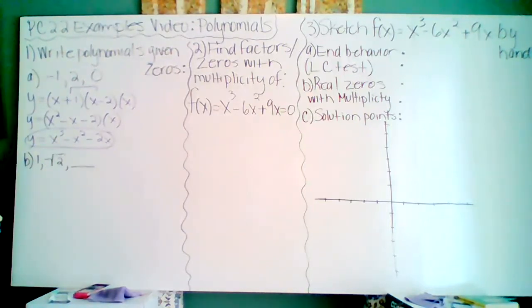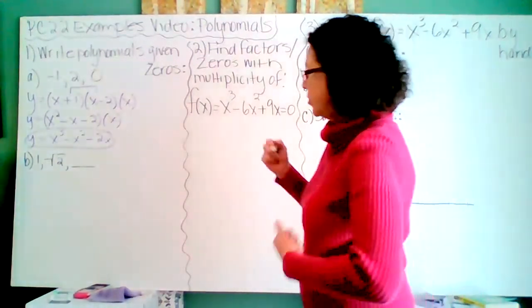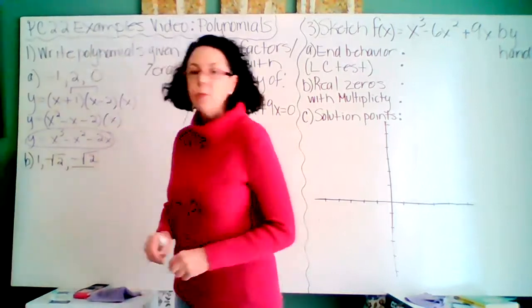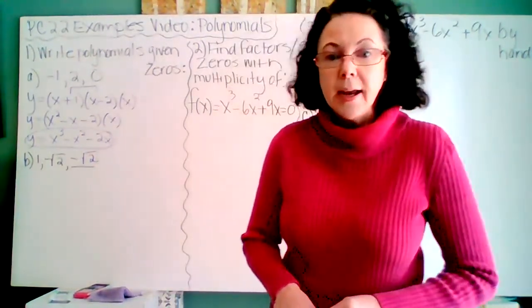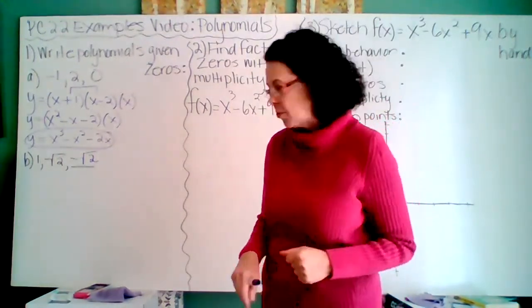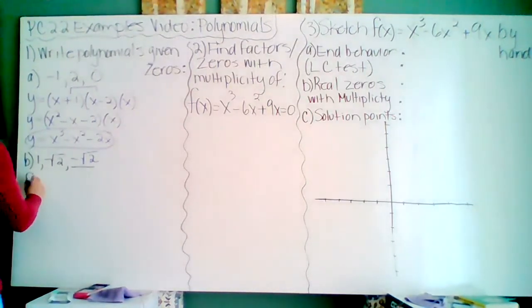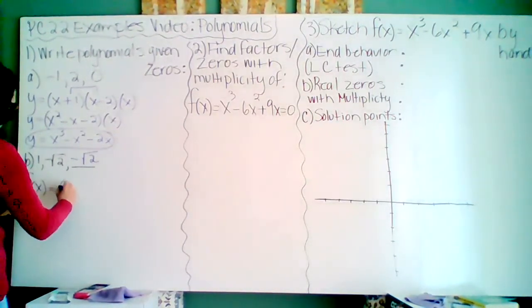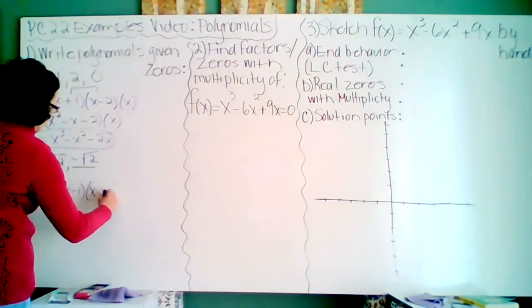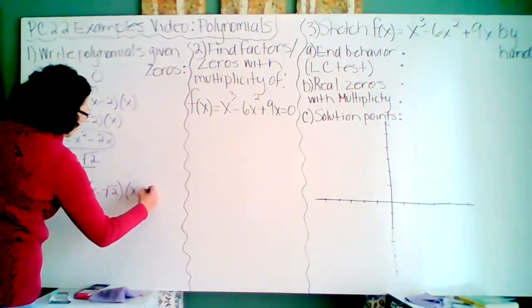On B, what if you are given the roots of 1 and the square root of 2? As we said in our notes, there must also be a negative square root of 2. Because when someone solved for these roots, and they took the square root to do that, they had to have a plus or minus in front of that square root of 2. Let's write the factors. So for 1 is x minus 1. For the square root of 2 is x minus the square root of 2. And for a negative square root of 2 is x plus the square root of 2.